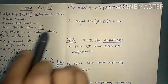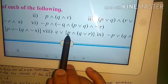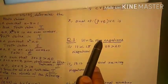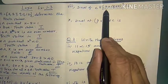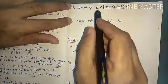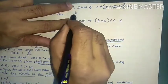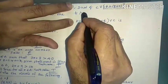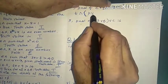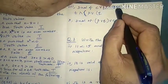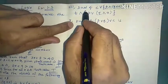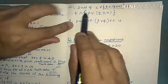Question number 8: find the dual of C ∨ [P ∧ (Q ∨ R)]. Its dual is: C becomes T, disjunction becomes conjunction, giving T ∧ [P ∨ (Q ∧ R)]. P remains, conjunction becomes disjunction, Q remains, disjunction becomes conjunction, R remains. That is the dual of question 8.